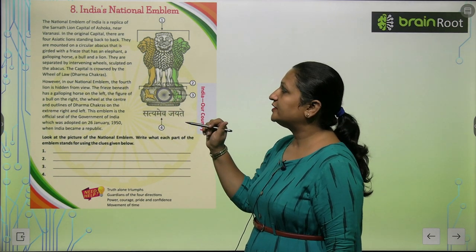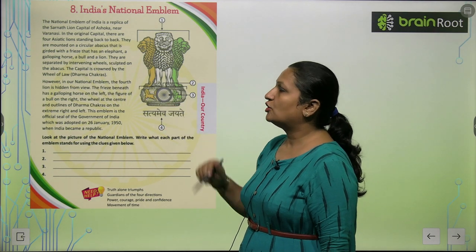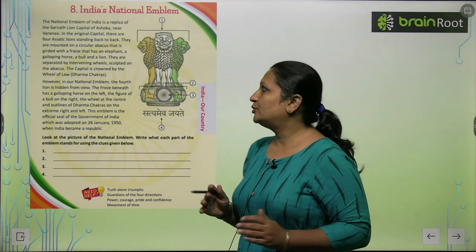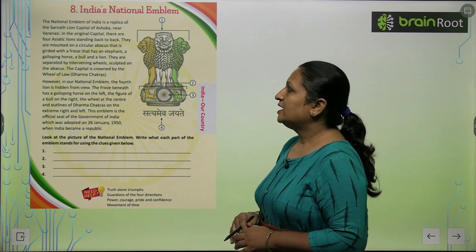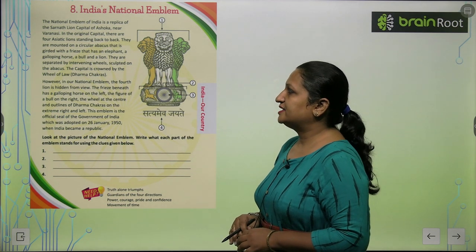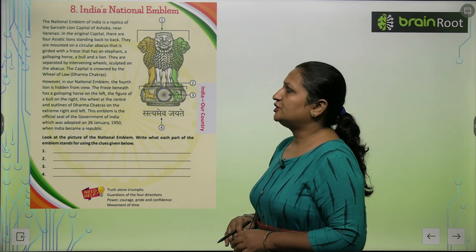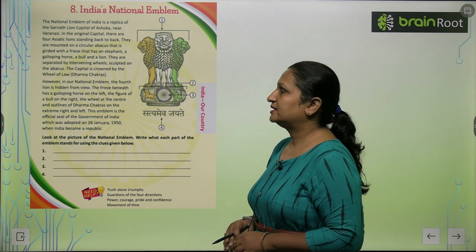On the frieze, we see an elephant, a galloping horse, a bull, and a lion. They are separated by intervening wheels sculpted on the abacus.